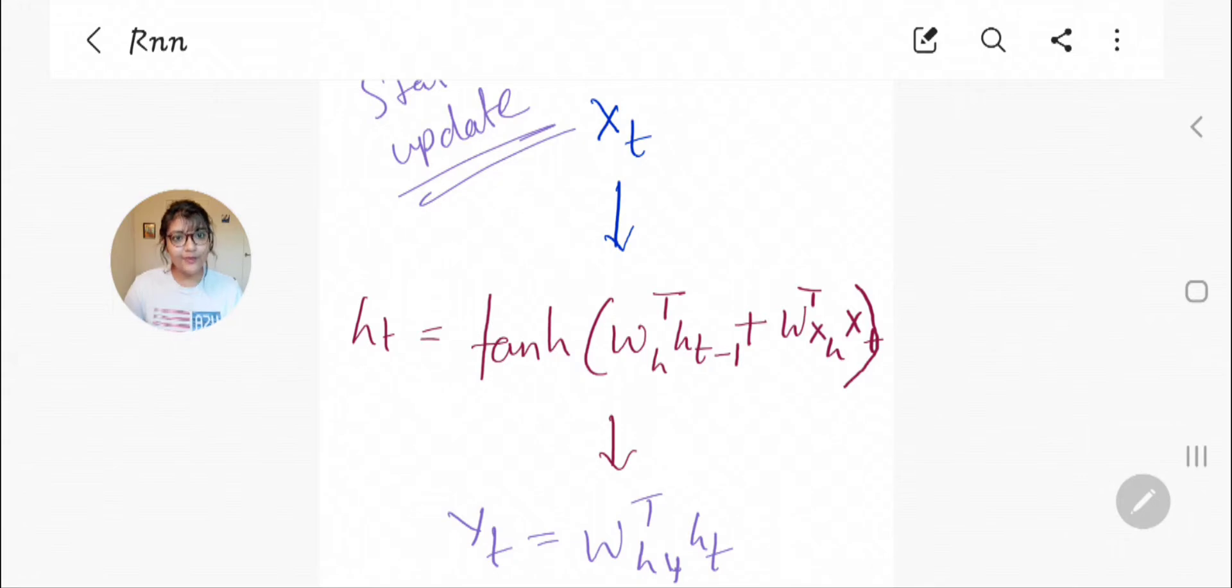Our output y of t at a given time step is one kind of modified or transformed version of the internal state. This state comes by the multiplication by separate weight matrix. This is how generally RNN works and updates its hidden state.